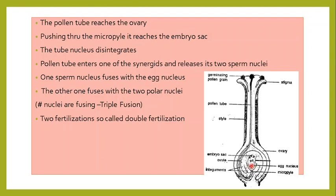One sperm nucleus fuses with the egg cell nucleus, and the other moves further towards the center and fuses with the two polar nuclei. What is happening in the central cell — one sperm nucleus joining with two polar nuclei, making three nuclei joining together — is known as triple fusion. One sperm nucleus fusing with the egg nucleus is a fertilization, and triple fusion in the center is another fertilization. So it is referred to as double fertilization.